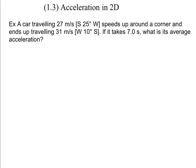So we've got a car traveling at 27 meters per second, south 25 degrees west. It's going to speed up around the corner and end up traveling at a different velocity. It takes seven seconds. We're going to look for its average acceleration.